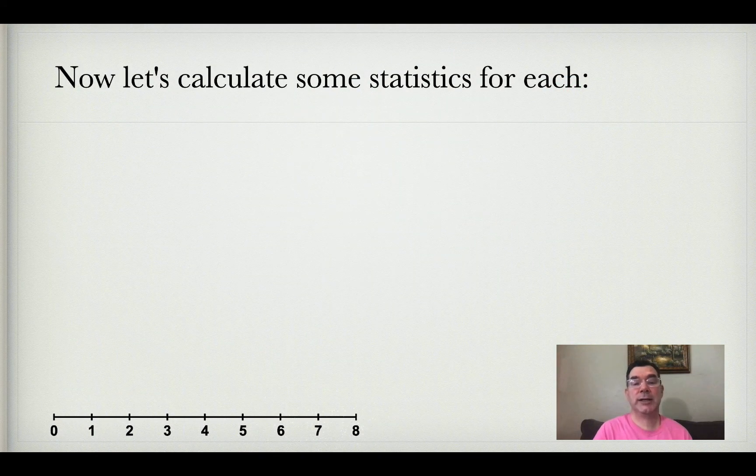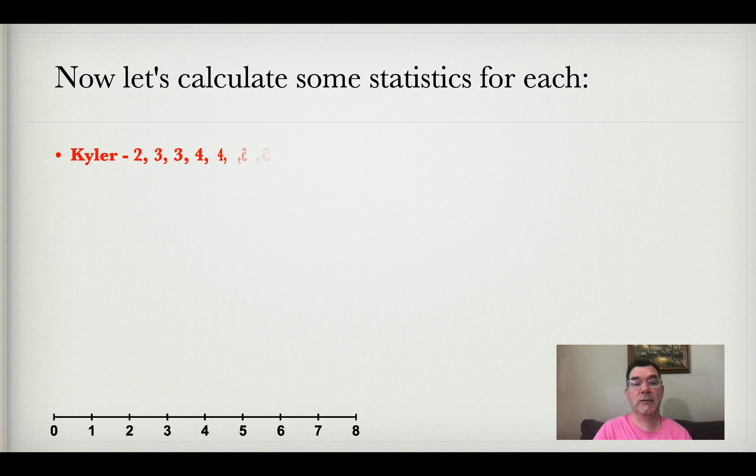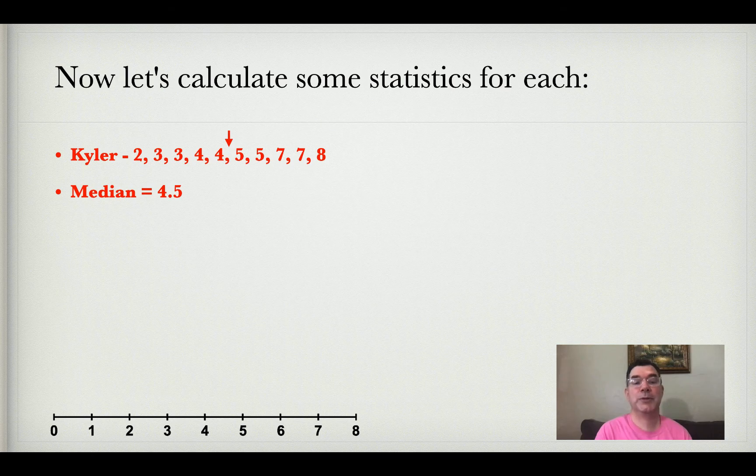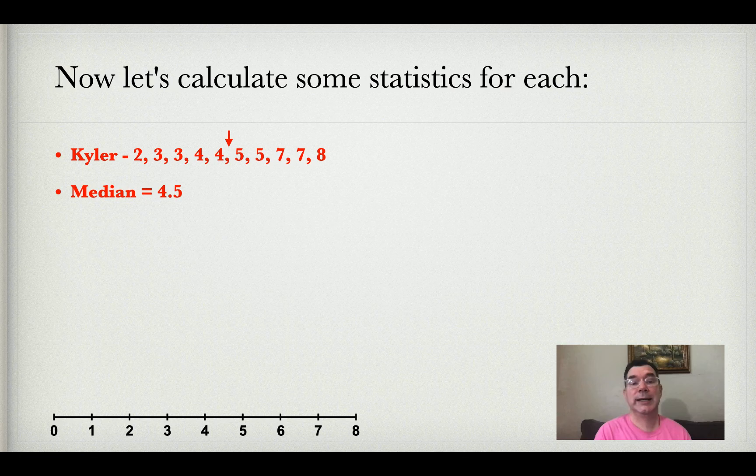Let's calculate some statistics for each. There's Kyler's data again. The median is going to be the halfway point between the fifth and sixth numbers because there are ten numbers in the list. The average of four and five is 4.5.